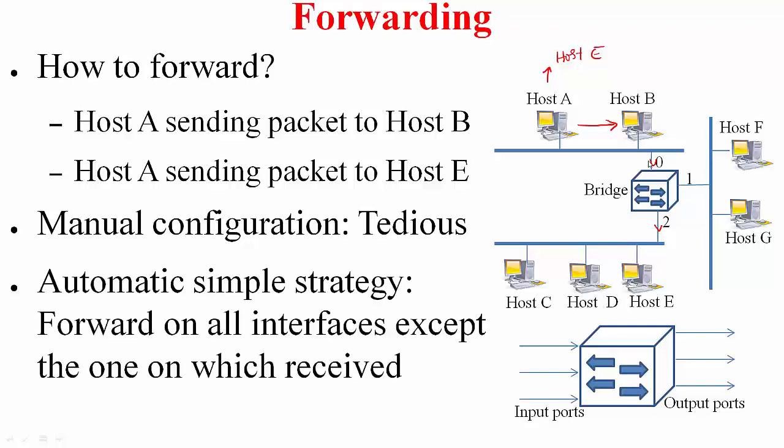Here is what it can do. Whenever it receives a packet on a given port, you just send it out on all the other ports except on the port in which it was received. For example, when host A sends a packet to host B, it received it on port 0, you send it out on port 1 as well as port 2. The same applies when host A sends a packet to host E. In the first case where host A is sending to host B, this forwarding on 1 and 2 is rather wasteful because host B is already on the same segment, but that is okay. It is not going to produce an incorrect result. Host B is still getting its packet, it is not efficient.